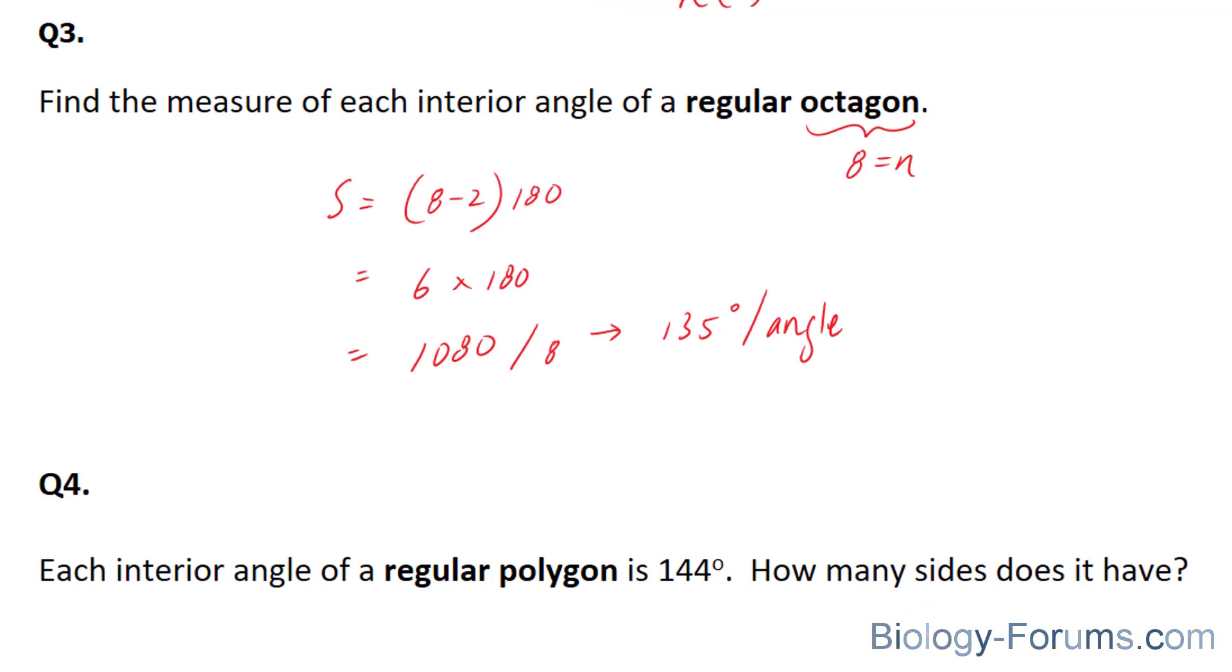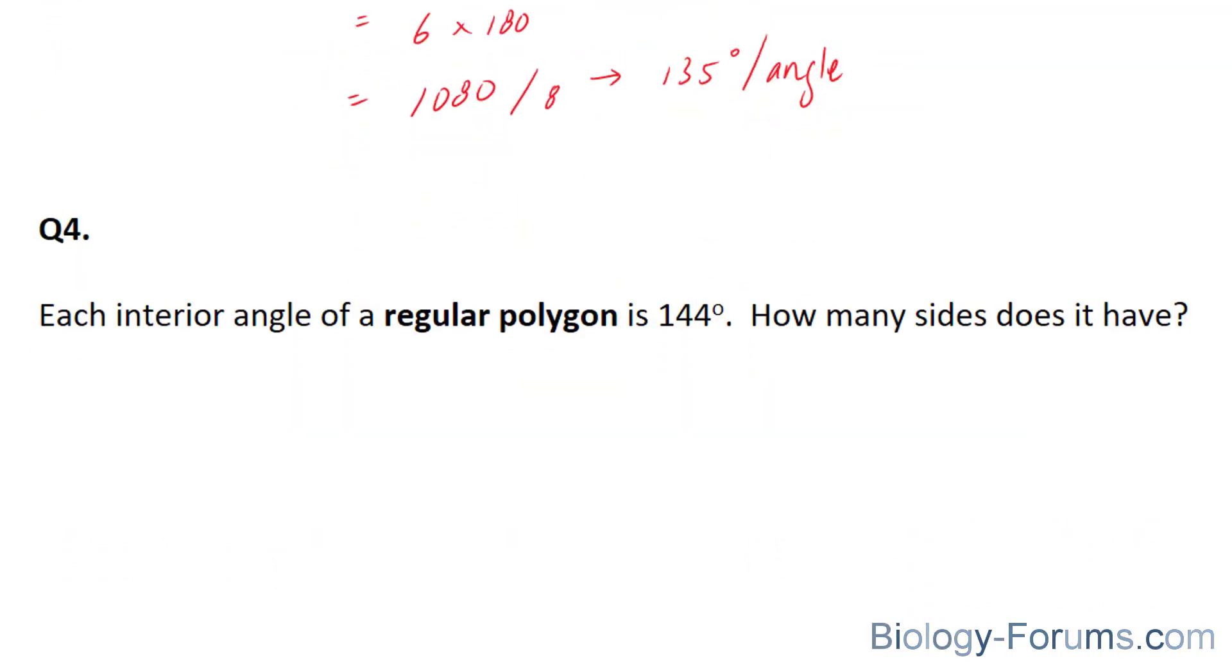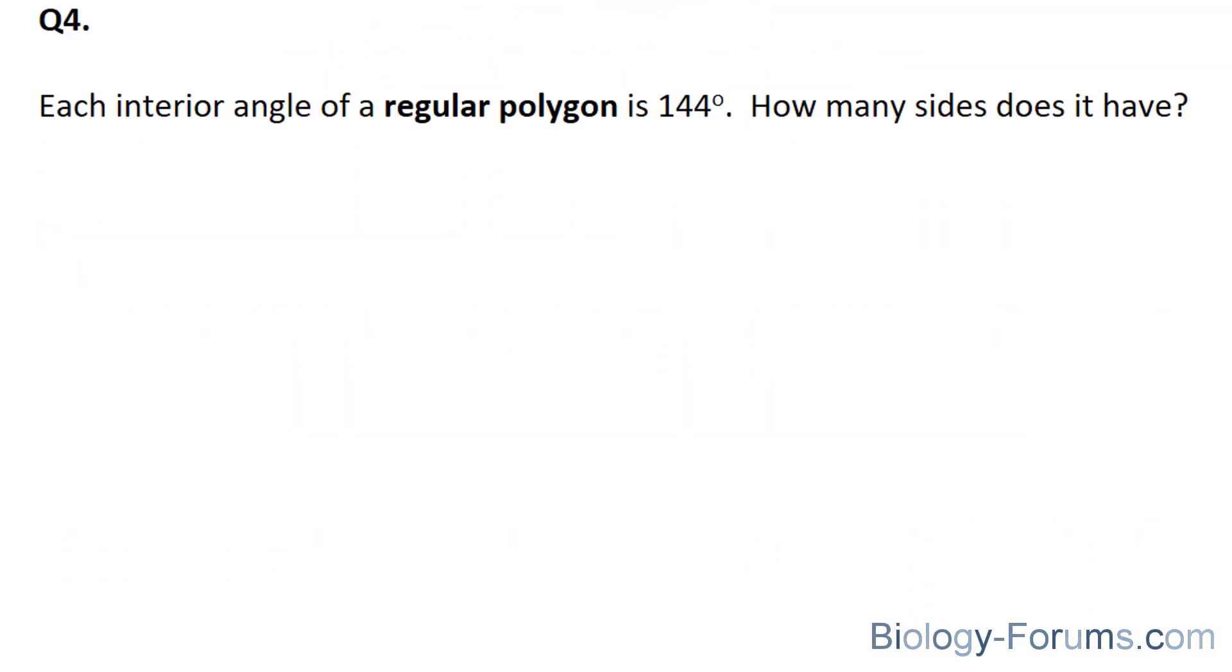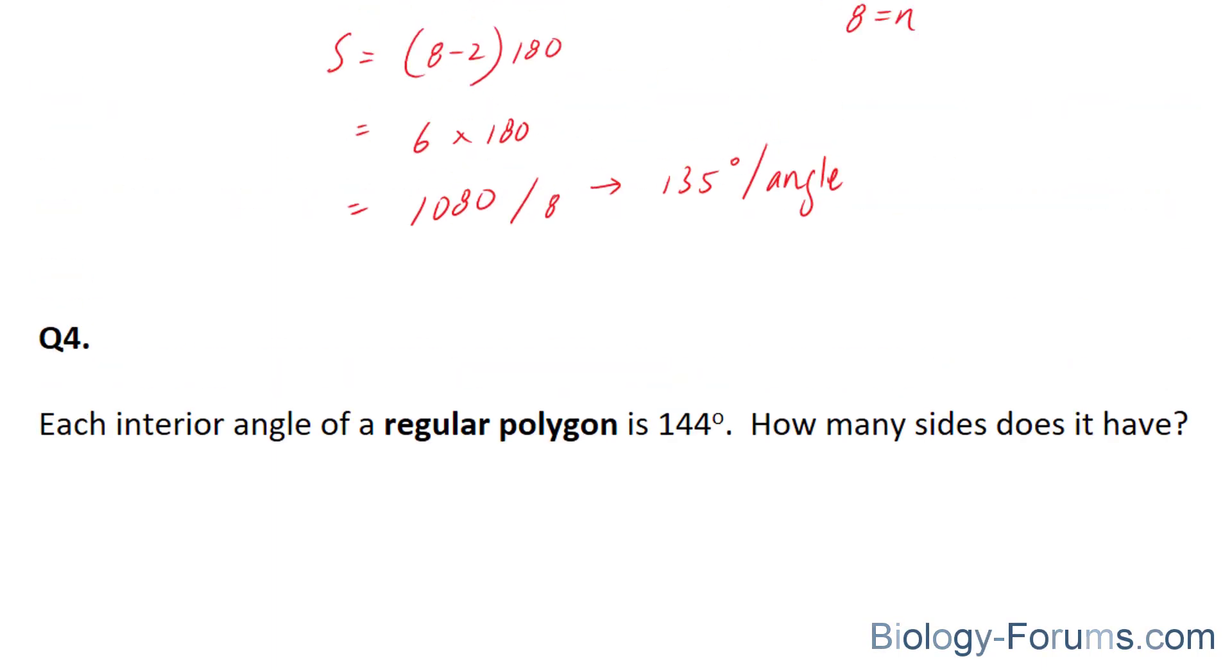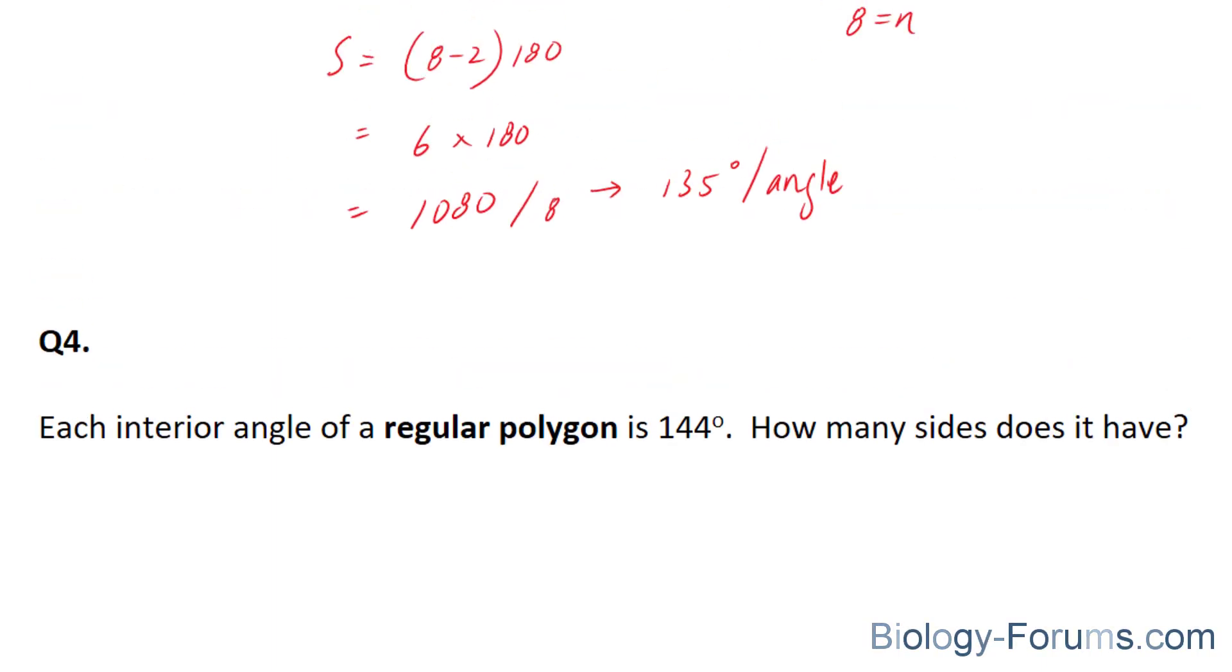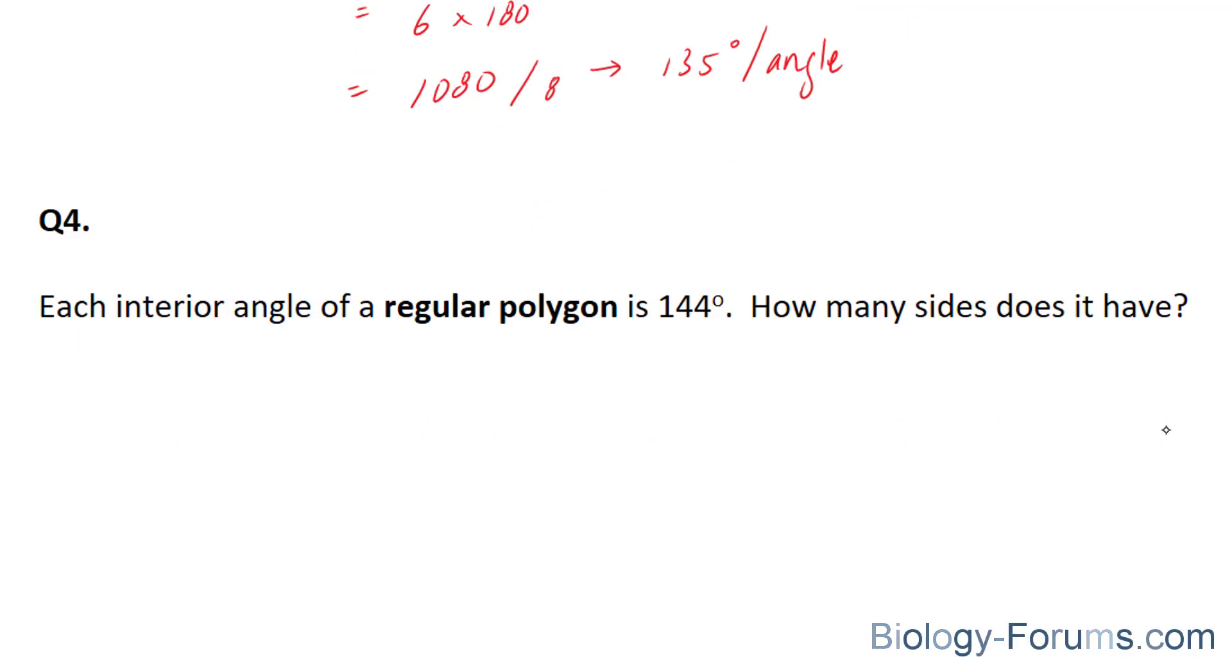Lastly, in our final question, which I find to be the most trickiest of the four, this time they give us an interior angle of 144 degrees and they don't tell us the number of sides. So we have to work backwards. Now remember that if we have a shape, let's say any shape, let's just show a perfect regular triangle.